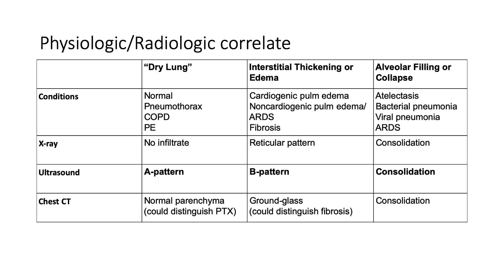Now we'll discuss groups of diagnoses created by ultrasound patterns. An A pattern indicates air in the chest, which can be normal lung, pneumothorax, COPD, or PE. A B pattern indicates interstitial thickening or edema, which could occur due to cardiogenic pulmonary edema, non-cardiogenic pulmonary edema such as ARDS, interstitial pneumonia, numerous other processes, or fibrosis. A consolidation pattern is typically due to alveolar filling or collapse.